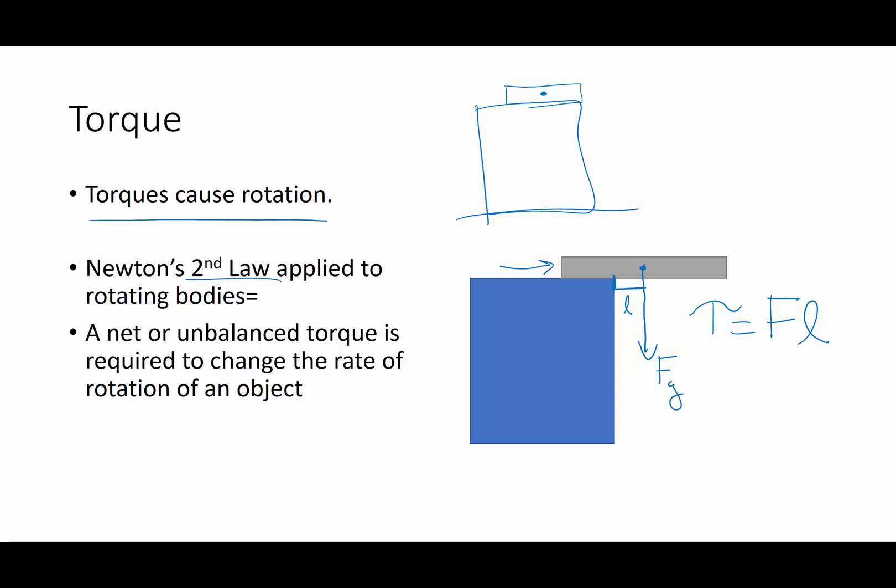Newton's second law applied to rotating bodies basically says that a net or an unbalanced torque is required to change the rate at which something rotates. So if you've got an object that's not rotating, you're going to have to apply some sort of a torque to make it rotate, or to make it change its rate of rotation, speed up or slow down.